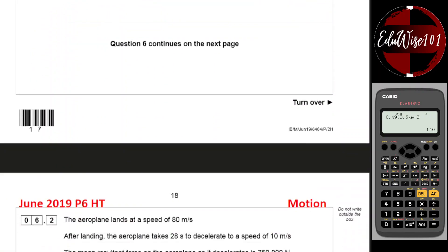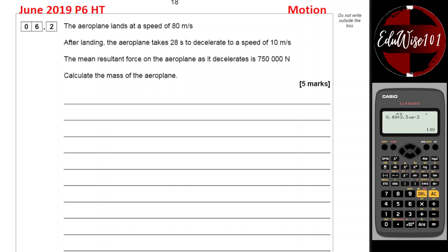Next part, question 6.2. The airplane lands at a speed of 80 meters per second. After landing, the airplane takes 28 seconds, that's the time to decelerate to a speed of 10 meters per second. That's my final velocity, initial velocity.